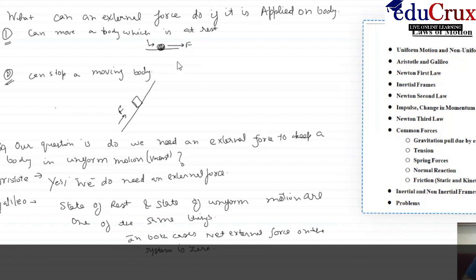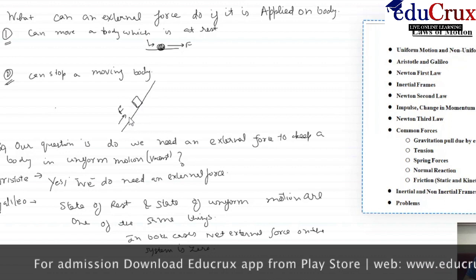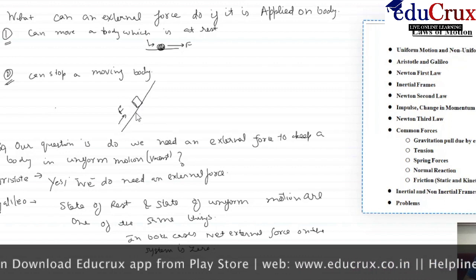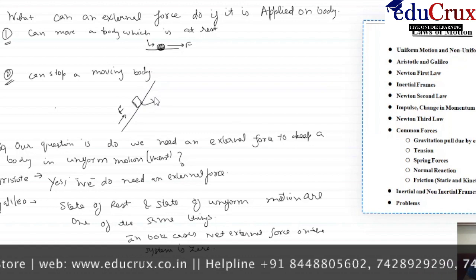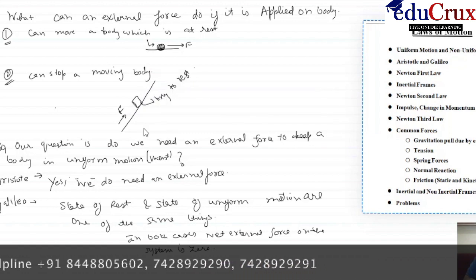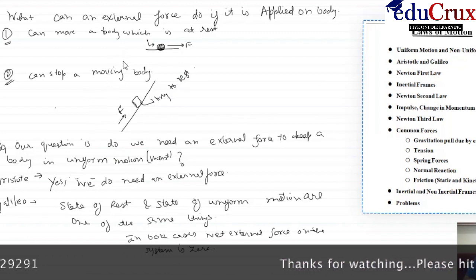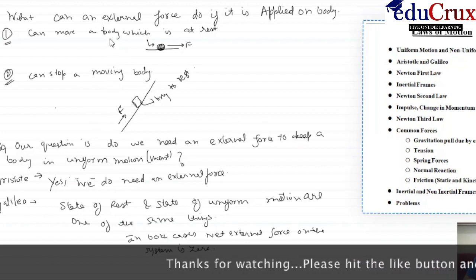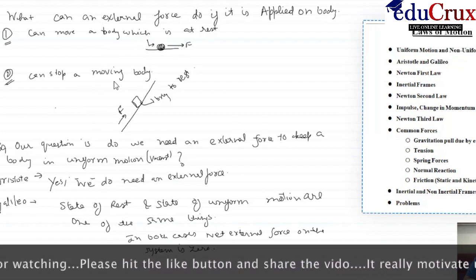The second thing an external force can do is it can stop a moving body. Suppose I have an inclined plane and a body is moving down the inclined plane; then I can apply an external force in the opposite direction of the motion and bring this body to rest. So these are the two things we expect from an external force: it can move a body which is at rest, and it can stop a moving body.